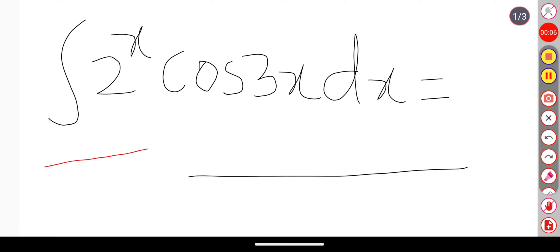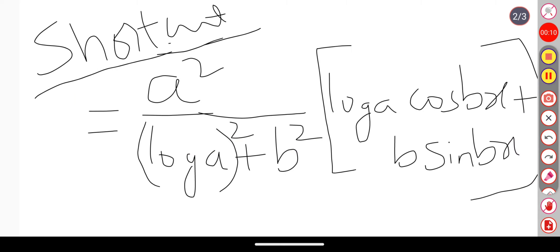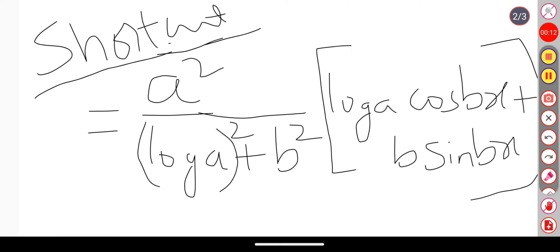The question is integration 2^x cos 3x dx equals dash. Now to solve this problem, we have one shortcut present in our MZNIT. The shortcut is something like this.